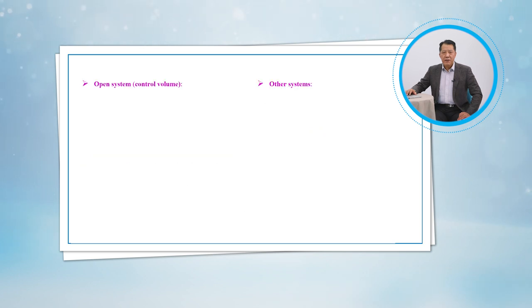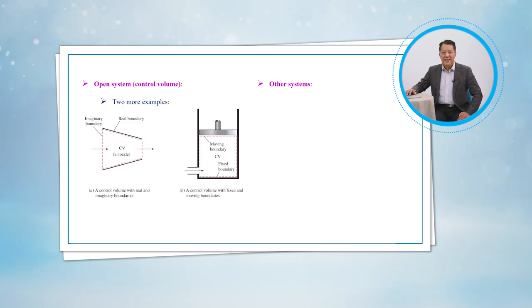A control volume can be fixed in size and shape, as in the case of a nozzle, or it may involve a moving boundary. Most control volumes, however, have fixed boundaries and thus do not involve any moving boundaries. A control volume can also involve heat and work interactions just as a closed system, in addition to mass interaction.